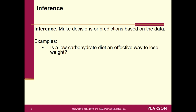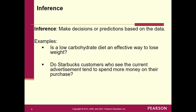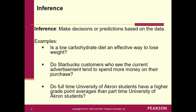For example, remember the low-carb diet? We can make a decision about whether it's an effective way to lose weight. With Starbucks, we can determine whether customers who see the current advertisements spend more money. Or we can ask whether full-time University of Akron students have a higher GPA than part-time students. We take the data and start learning about different groups and sets of people. We're just trying to learn a little about the world around us — and that ends Section 1.1.